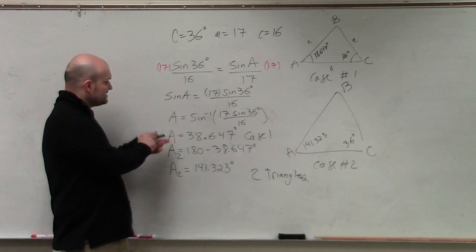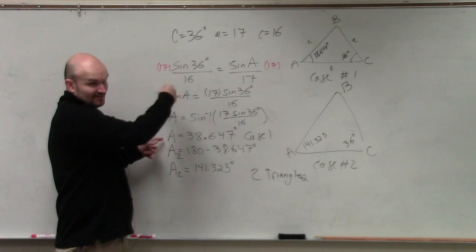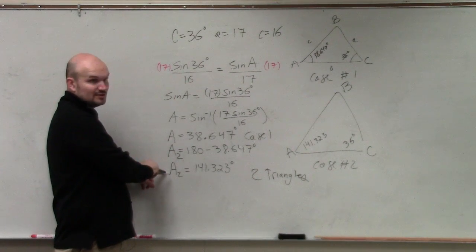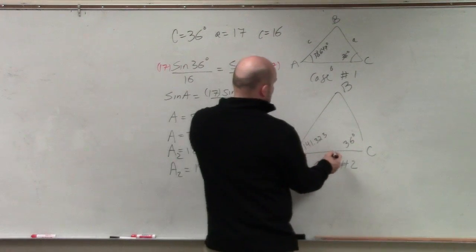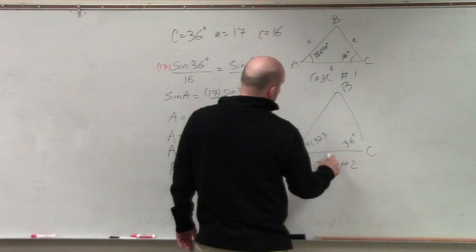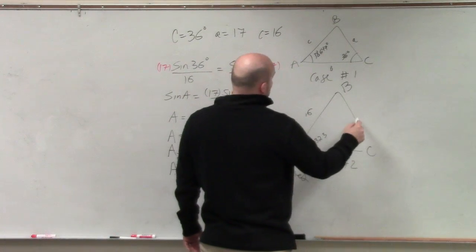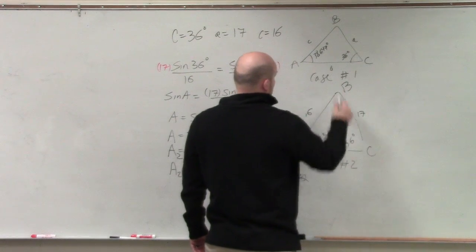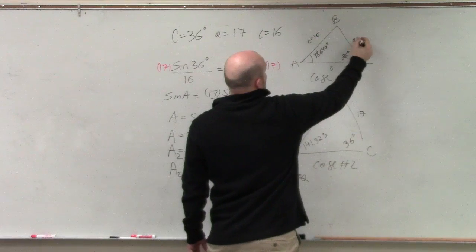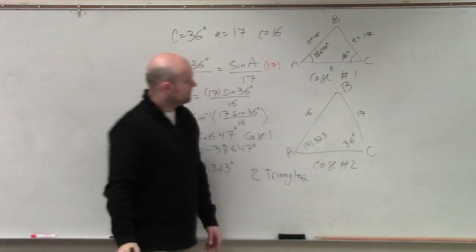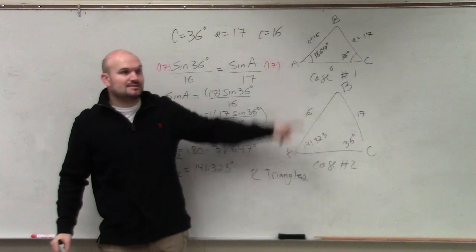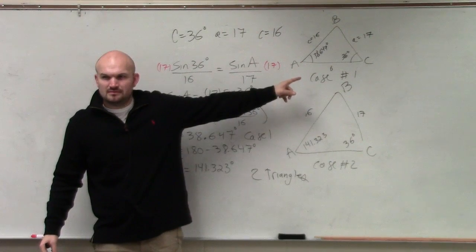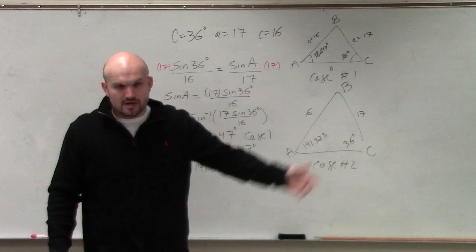You would have to do the law of sines for A, and then find the missing sides, and then you have to do the law of sines for A2, and then do law of sines. So basically, you would be doing law of sines for two different triangles. So you'd have case one, and then case two, and then you guys would have to do it twice.